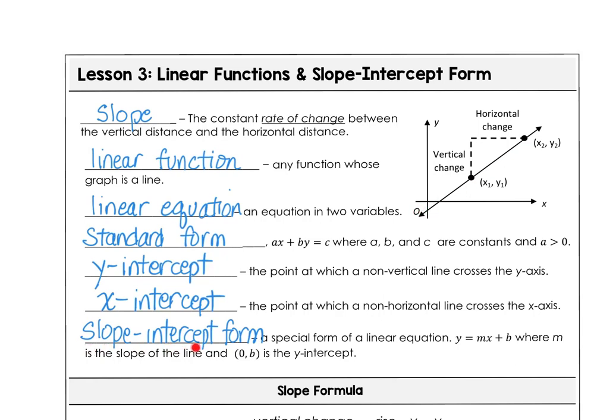And then the famous formula slope-intercept form is that special form of a linear equation, y equals mx plus b, where we know m represents the slope of the line. And the b-value is the y-coordinate of the ordered pair. That's the y-intercept. So 0,b is our y-intercept in that equation.